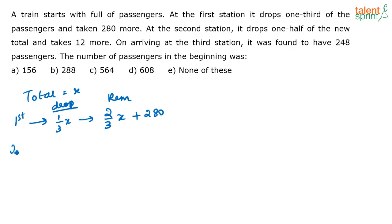Now what is he doing at the second station? At the second station he is dropping one-half of the new total. So one-half of this means half of two by three x plus 280. These many people he is dropping in the second station. So how many people are remaining in the train now? This half means again the other half has to remain. So the other half, that is a half of two by three x plus 280. These many people are remaining in the train.